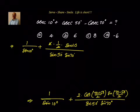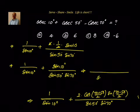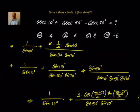The 2 and 2 will cancel. The next step will be 1 by sine 10 plus sine 10 divided by sine 50 into sine 70. Now can we take LCM for all of them together? The denominator will be sine 10 · sine 50 · sine 70, and the numerator will be sine 50 · sine 70 plus sine squared 10.